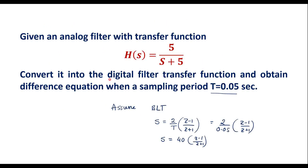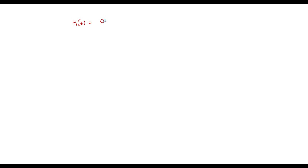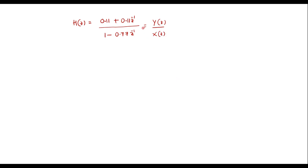So we have found the digital transfer function H(Z) = (0.11 + 0.11*Z⁻¹) / (1 - 0.77*Z⁻¹). Now we will obtain the difference equation. The digital transfer function is H(Z) = Y(Z) / X(Z). Let me do the cross multiplication.